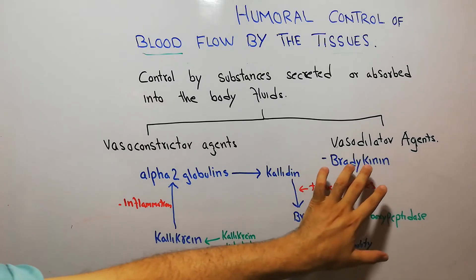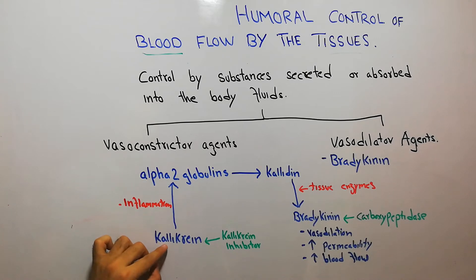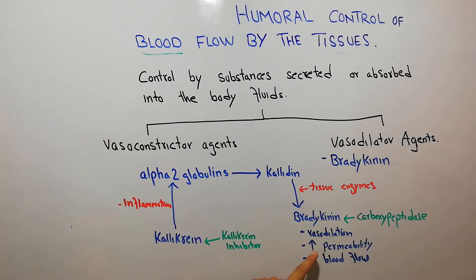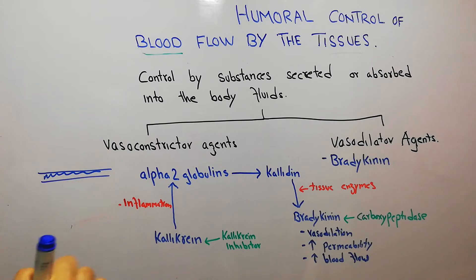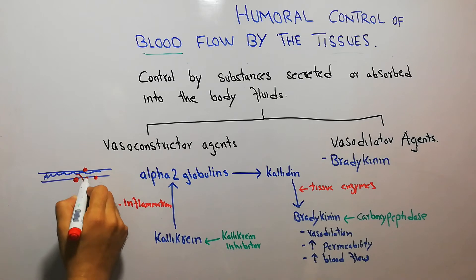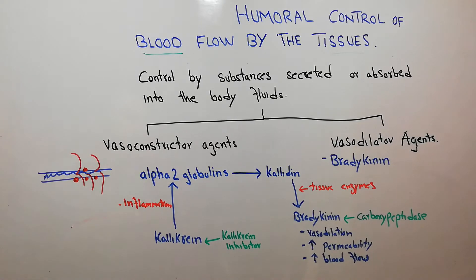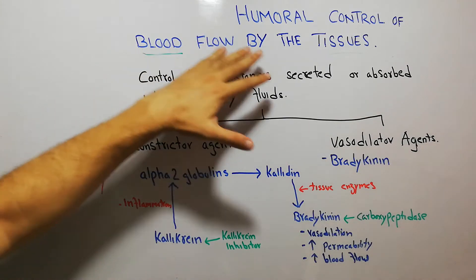Once bradykinin is formed, it acts at the site of inflammation that originally activated kallikrein. At that level it causes vasodilation — dilating the blood vessels so that blood flow increases. It also increases capillary permeability, allowing fluid to come out of the capillaries. Through both vasodilation and increased capillary permeability, bradykinin increases blood flow to the affected area.